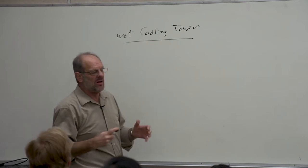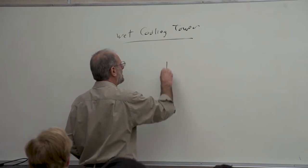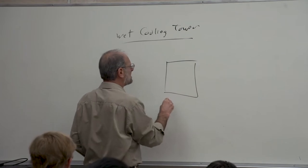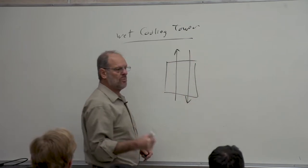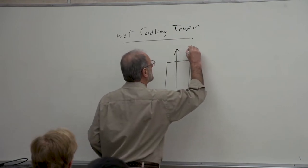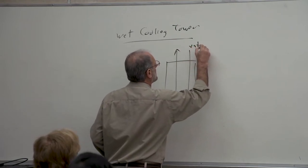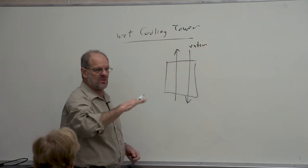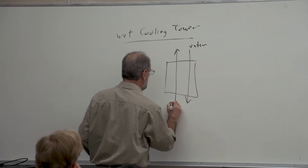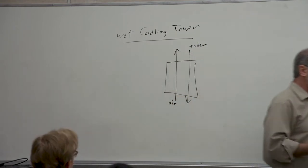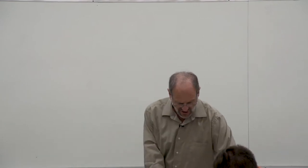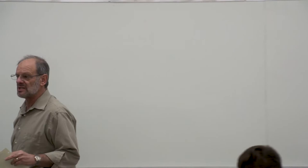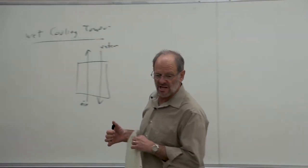So hopefully we recall that when we're dealing with a cooling tower, we actually have two different streams that we're dealing with. We've got a water stream that is essentially dribbling down through the cooling tower, and then we have an air stream which is flowing up through the cooling tower. And as these two streams come into physical contact with one another, heat transfer takes place.